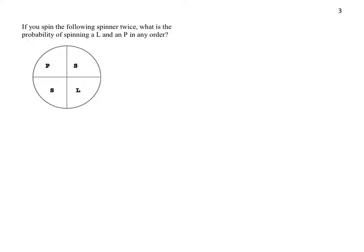If you spin the following spinner twice, what is the probability of spinning L and P in any order? Let's look at these. We're going to spin it once, so the first spin, and we're going to look at the second spin. I'm going to use a tree model again, even though we could use an area model.